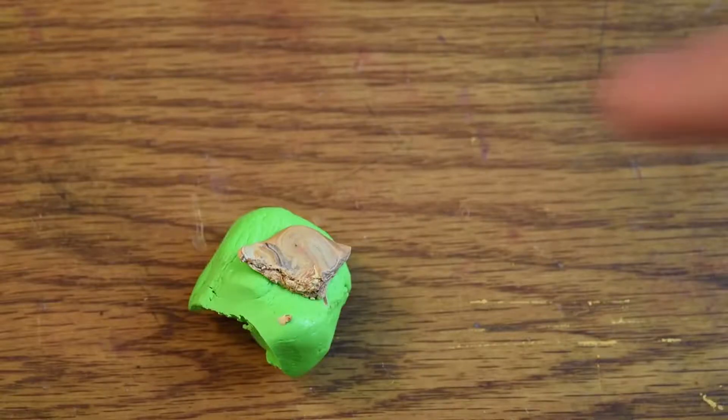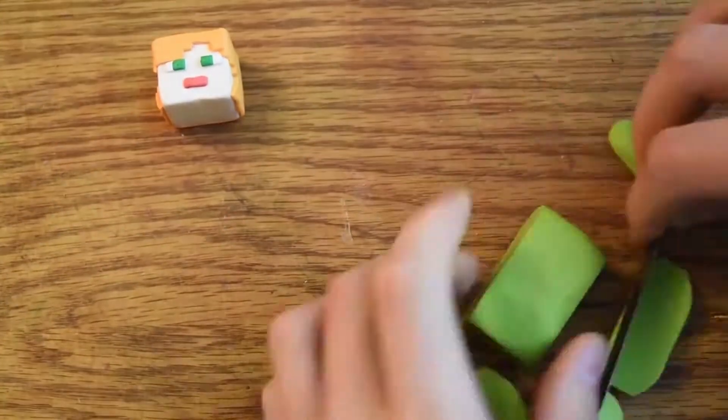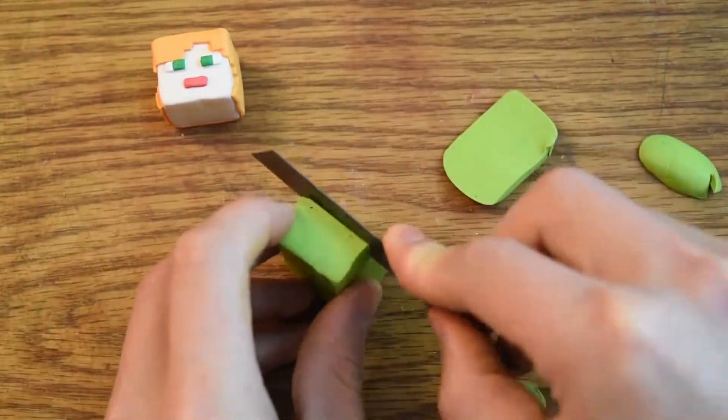Now moving on to the next part, we have this sort of really gross green color. It's just green and brown mixed together. And this is going to be for the shirt.